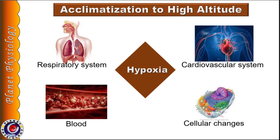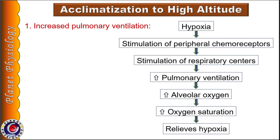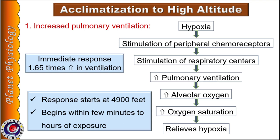The first and immediate response to hypoxia is to increase pulmonary ventilation, due to stimulation of peripheral chemoreceptors — present in carotid bodies and aortic bodies — because of hypoxia. These chemoreceptors stimulate respiratory centers to increase ventilation, resulting in increase in alveolar oxygen and oxygen saturation of hemoglobin, relieving hypoxia. This increase in alveolar ventilation starts at 4,900 feet and begins within a few minutes to hours of exposure. Increase in ventilation is about 1.65 times above normal.